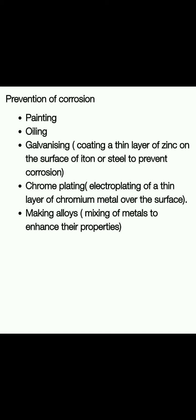How can we do this? First, we can apply paint to iron articles. A paint layer on the iron road or iron article will prevent air contact and thus prevent corrosion. The second method is using oil or grease — if we apply oil or grease, the metal will not come into contact with the atmosphere and corrosion will not occur.